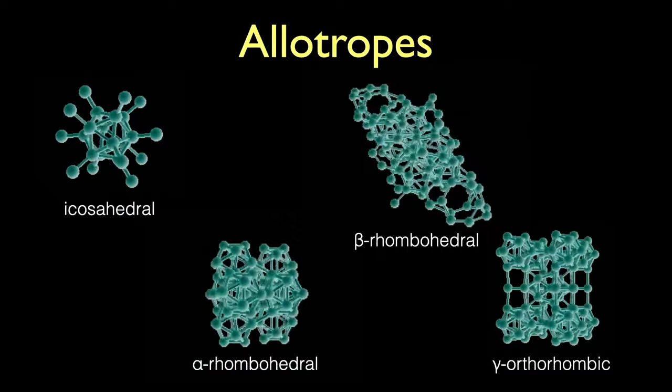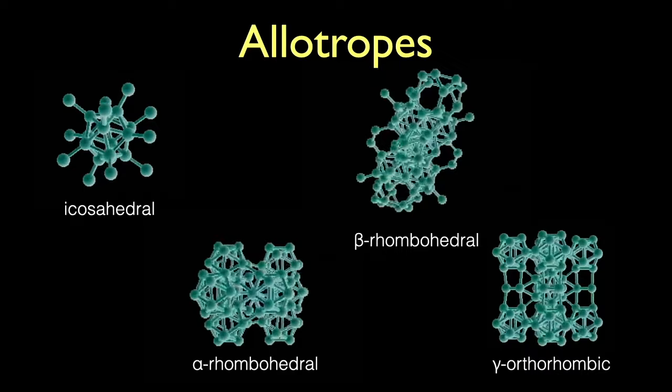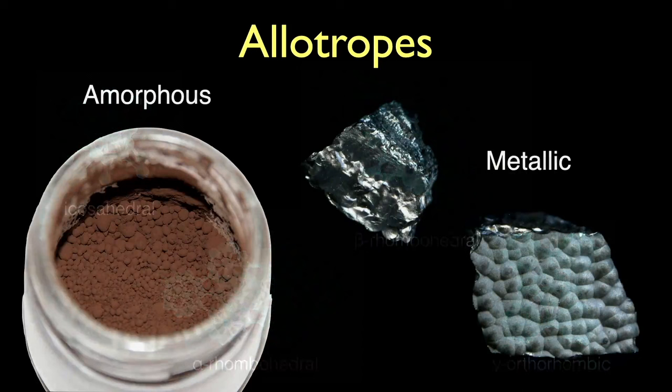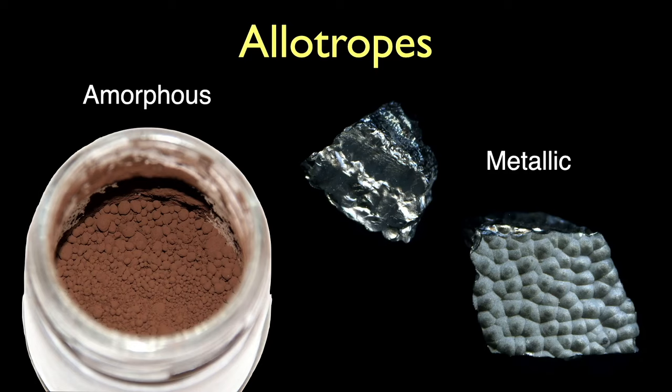Not only can you build different forms of boron nitride structurally, you can do the same with pure boron. These different structures are called allotropes. They're all pure boron, but with different atomic arrangements and different physical qualities. On the left you see an amorphous form of boron that appears as a brown powder. On the right, a more crystalline form that appears metallic. Both are pure boron.